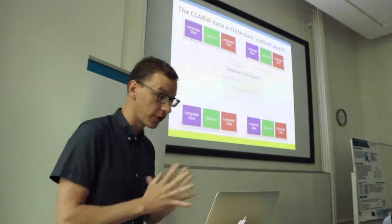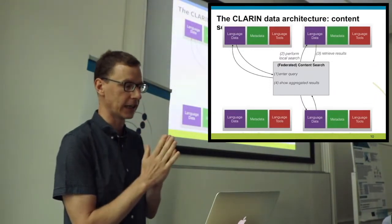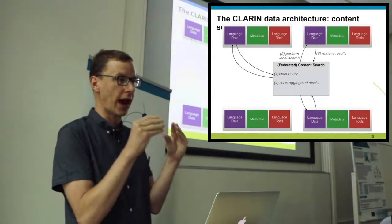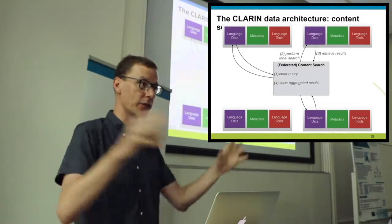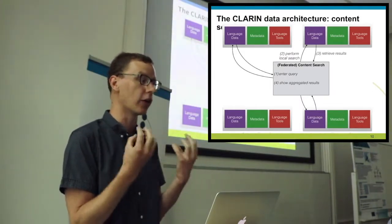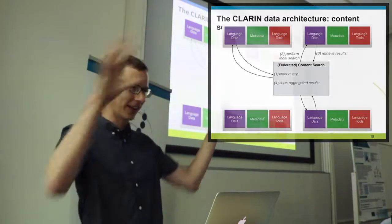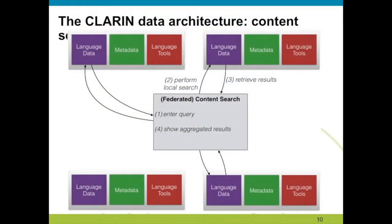Something else about the data architecture: sometimes it is not possible to search through everything centrally. For metadata it was possible to make a copy, index it, and make it searchable. That's not always the case for content data sets — it could be due to their mere size, copyright reasons (such as centers providing newspaper or magazine corpora still under copyright), or technical reasons.